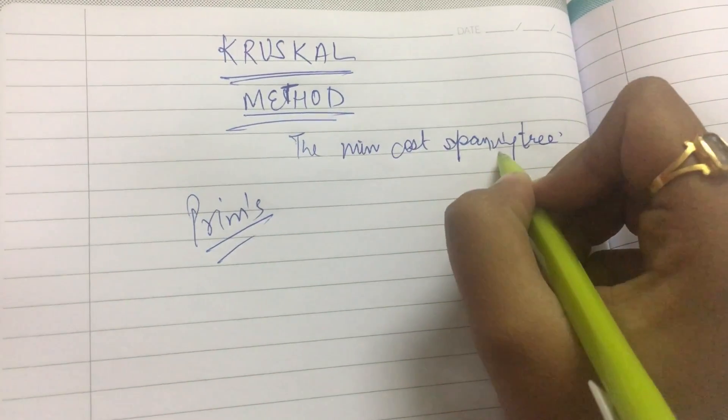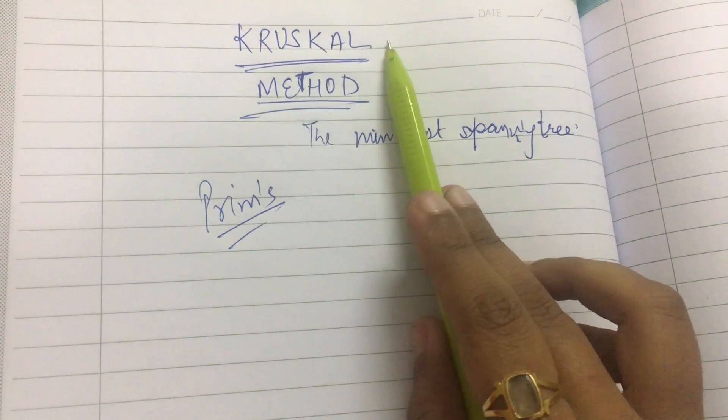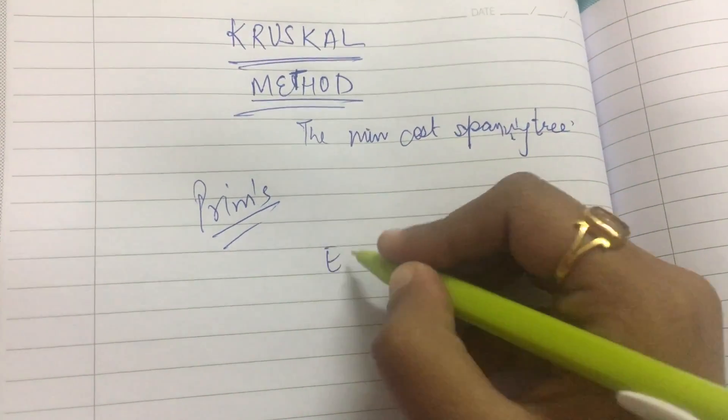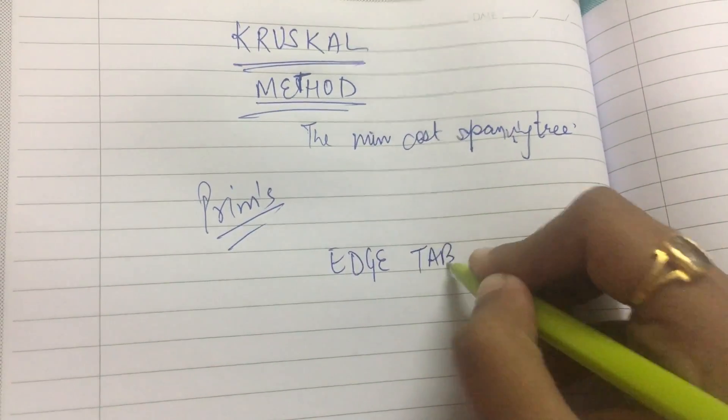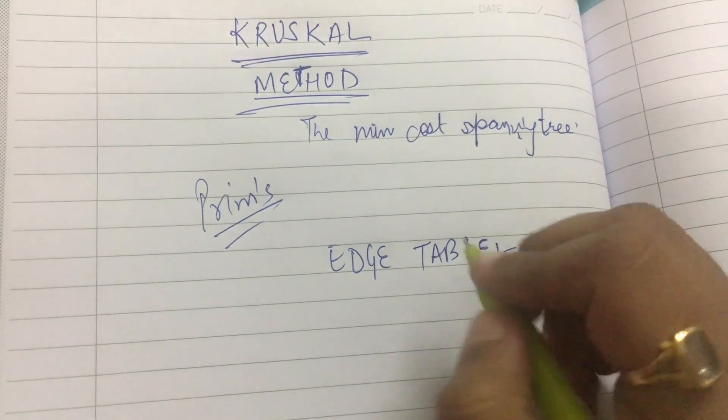Now we'll see the Kruskal method for finding the minimum cost spanning tree. Basically, we have to make an edge table in this method. So how do we do that?